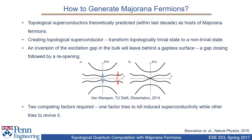This can be done by inverting the excitation gap in the bulk, which forms a gapless surface. As shown in the energy level diagram, the energy gap near the Fermi level needs to be closed first and then reopened, which is essentially inverting the gap. To do so, two competing factors are required: one factor tries to kill the induced superconductivity, while the other tries to revive it.